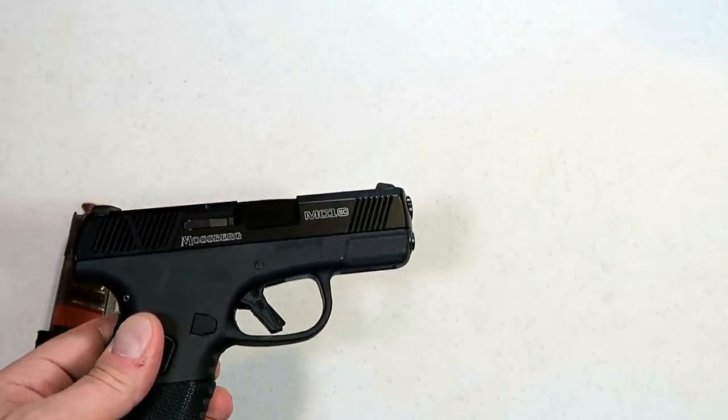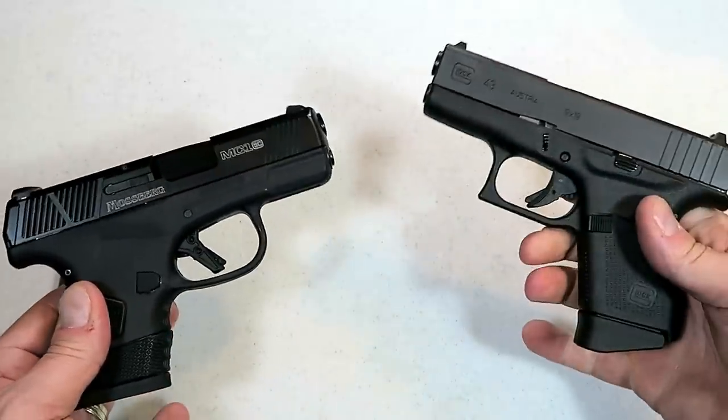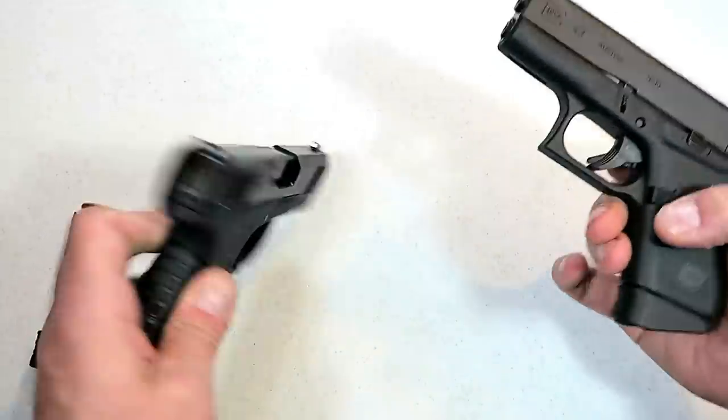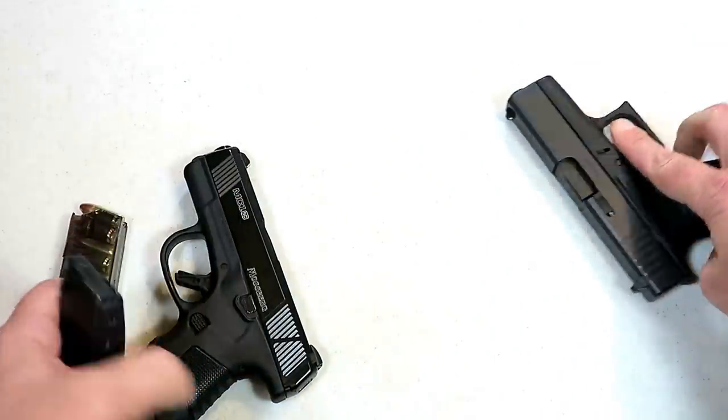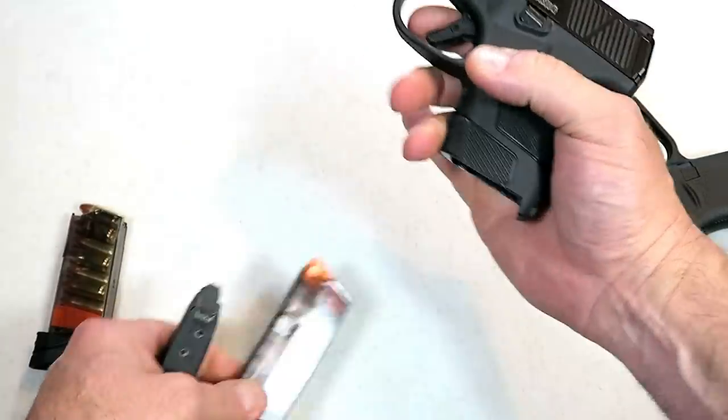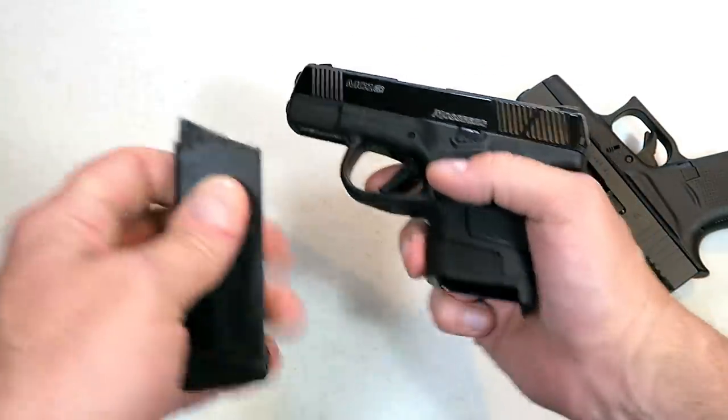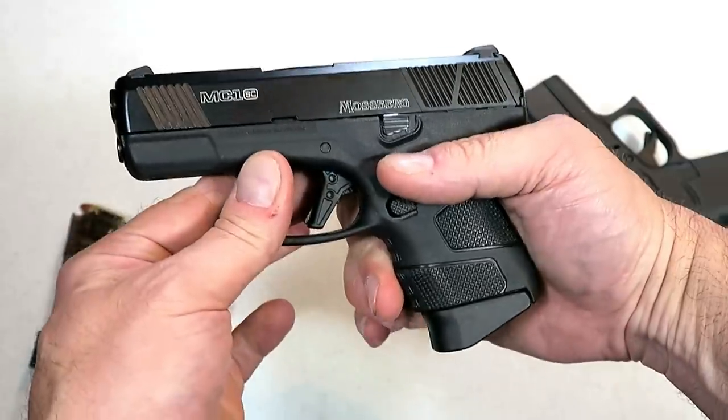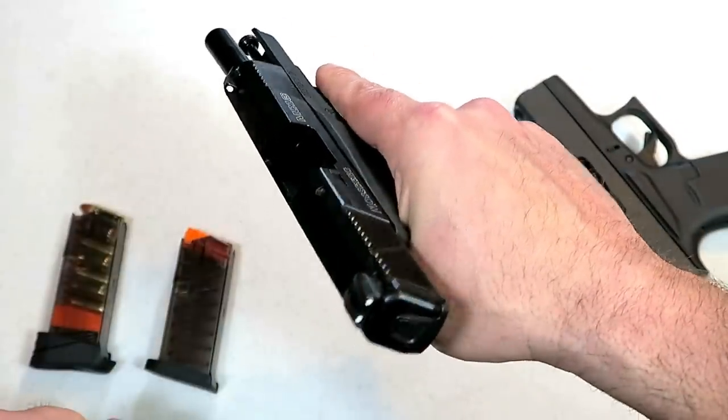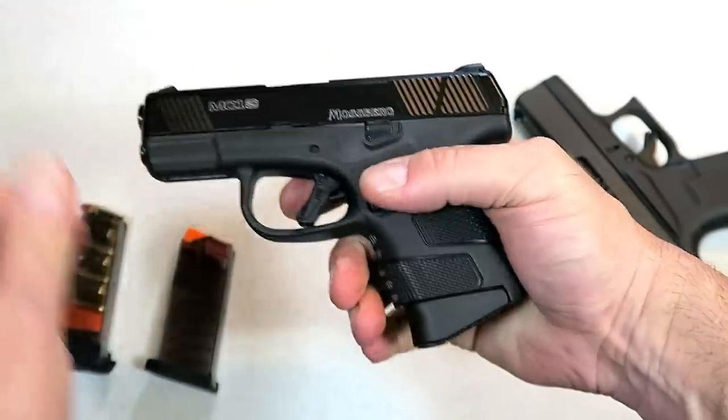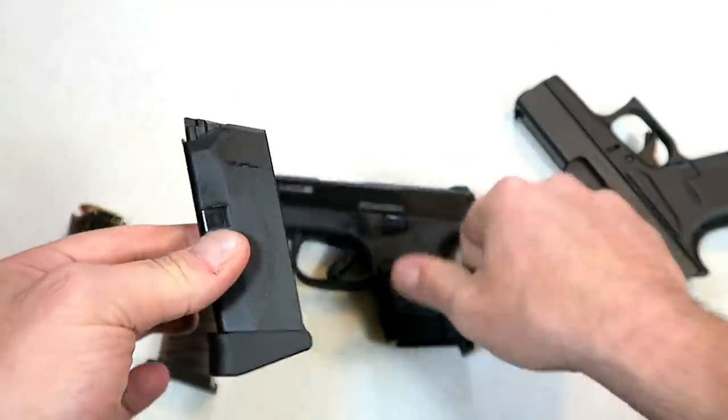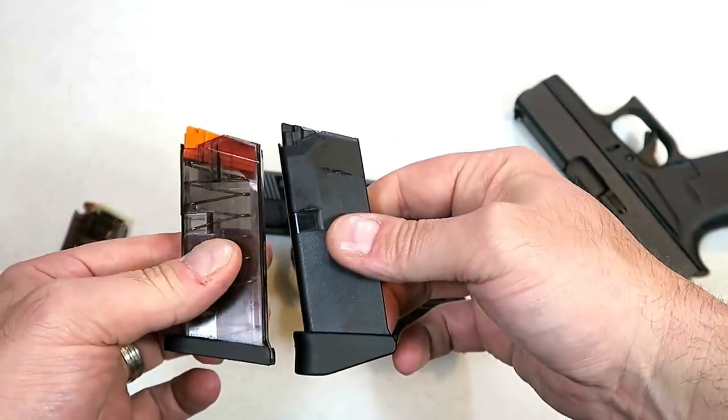We're going to take a look at a couple different handguns. We'll start with the Glock 43, the original Glock 43. The advantage here is that people are saying, and it is true that this mag will fit in the MC1. Just like that. So if that matters to you. Now here we have six-round mag, six-round mag. Definitely look different.